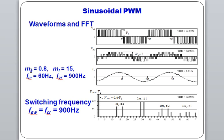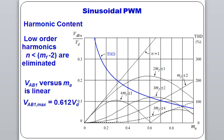If we look at modulation index and frequency modulation, for a particular modulation index value, the total harmonic distortion is shown by the blue curve. As we increase the modulation index from 0 to 1, the total harmonic distortion is reduced — the harmonic impact or penetration is reduced.